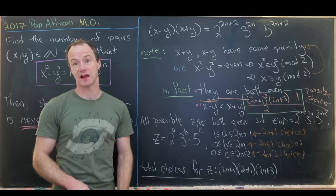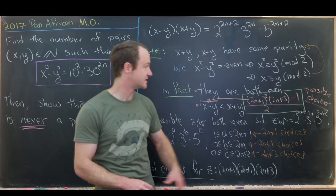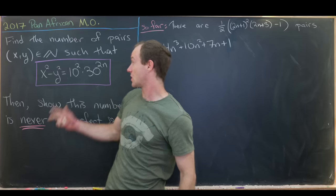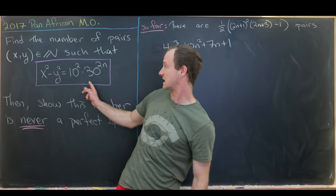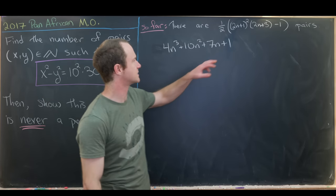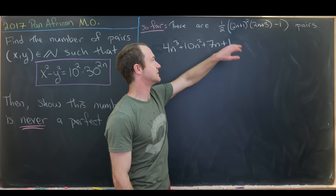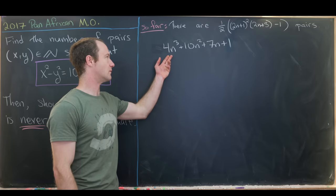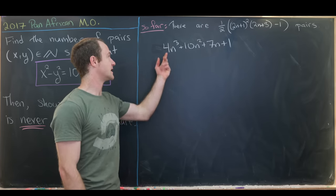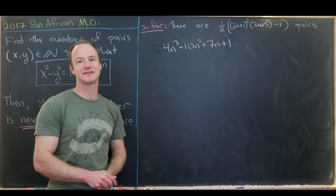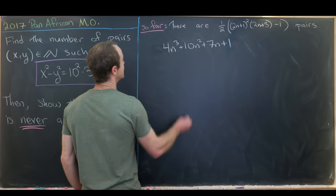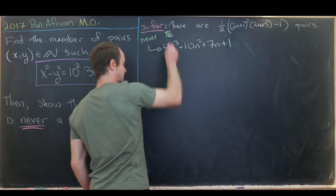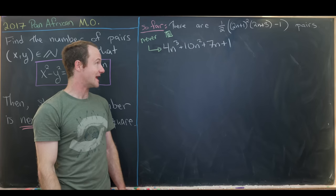Now for the second part: we want to show this number is never a perfect square for any natural number n. Expanding [(2n+1)² × (2n+3) − 1] / 2 gives 4n³ + 10n² + 7n + 1, and our goal is to show this cubic polynomial is never a perfect square.